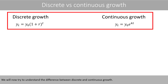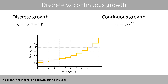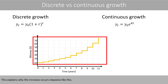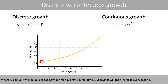We will now try to understand the difference between discrete and continuous growth. A typical example of discrete growth is our previous bank account example, because the bank usually pays the interest only once per year. This means that there is no growth during the year; the growth instead occurs instantaneously at a certain time point. This explains why the increase occurs stepwise. If we would have continuous growth, we would instead have a smooth curve over time.